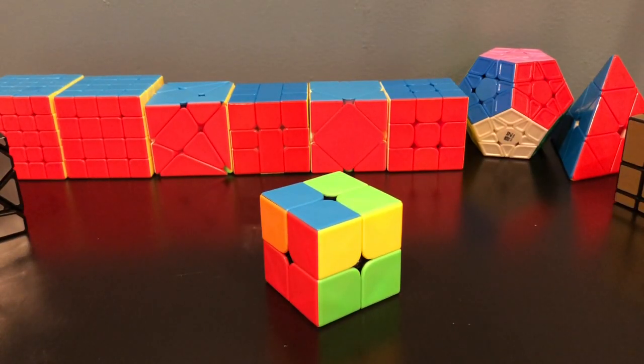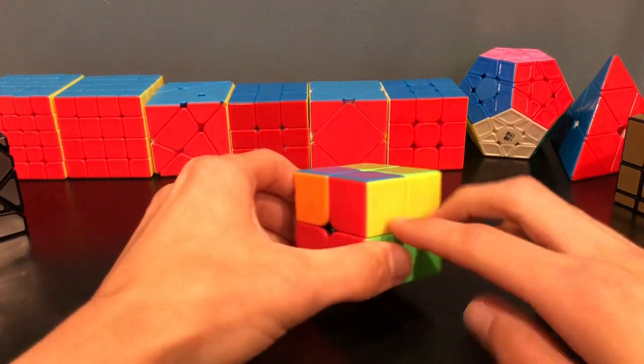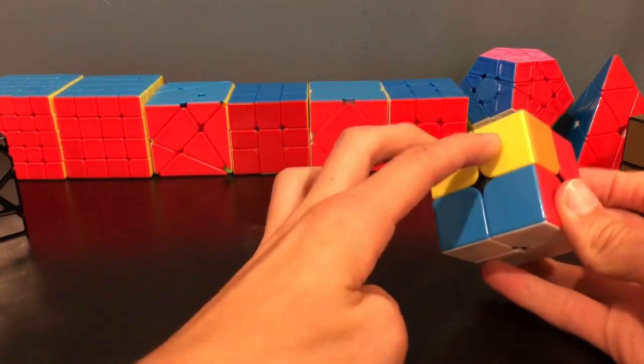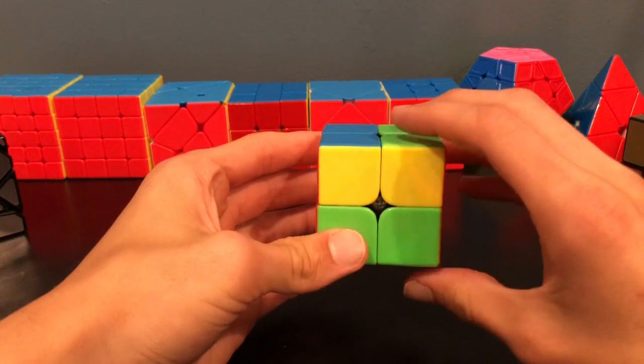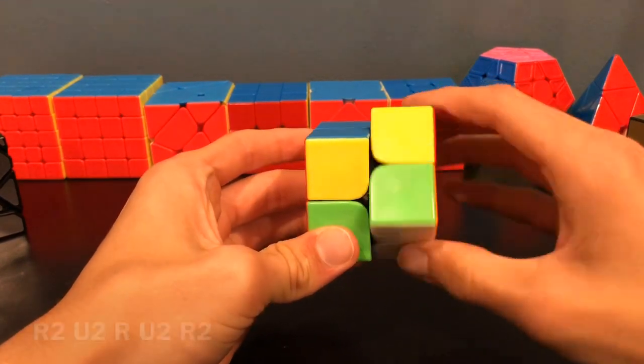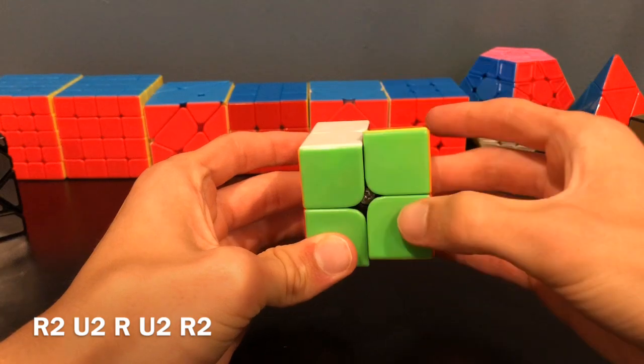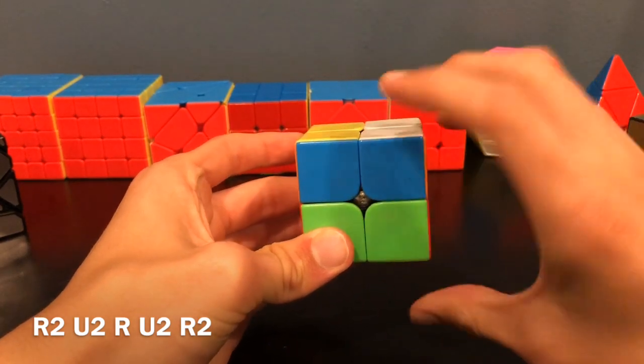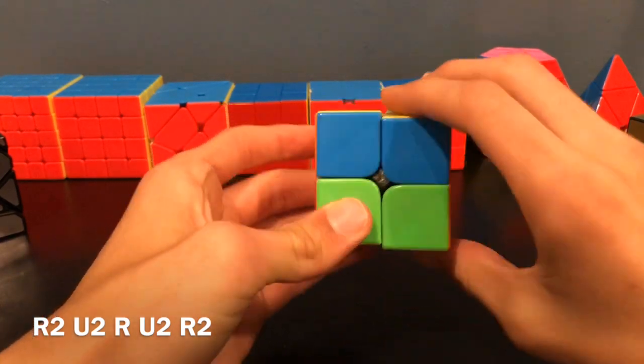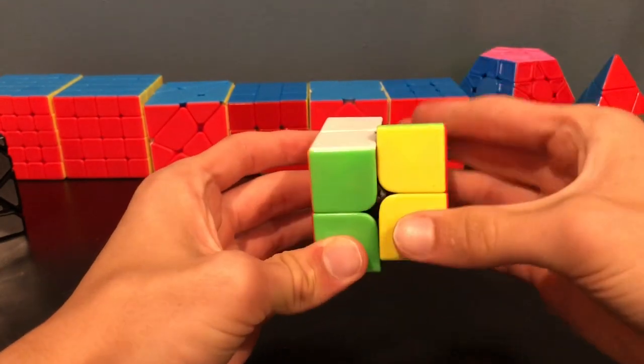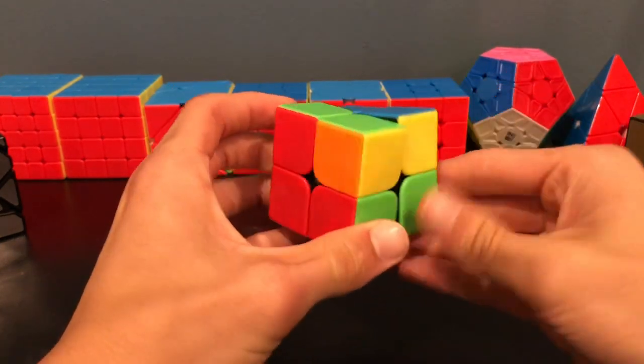This next case is a standalone. It's when you have pieces facing out here, and pieces facing out here. So, you'll do this algorithm. R2, U2, R, U2, R2. This. There you go.